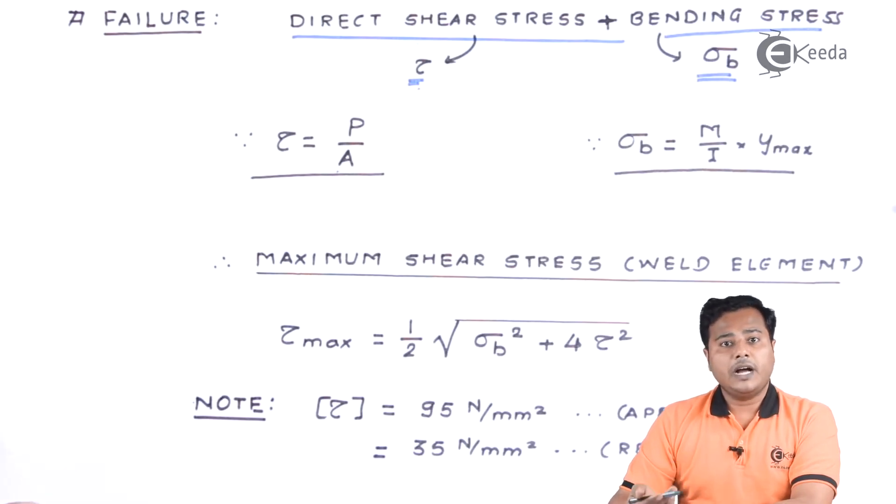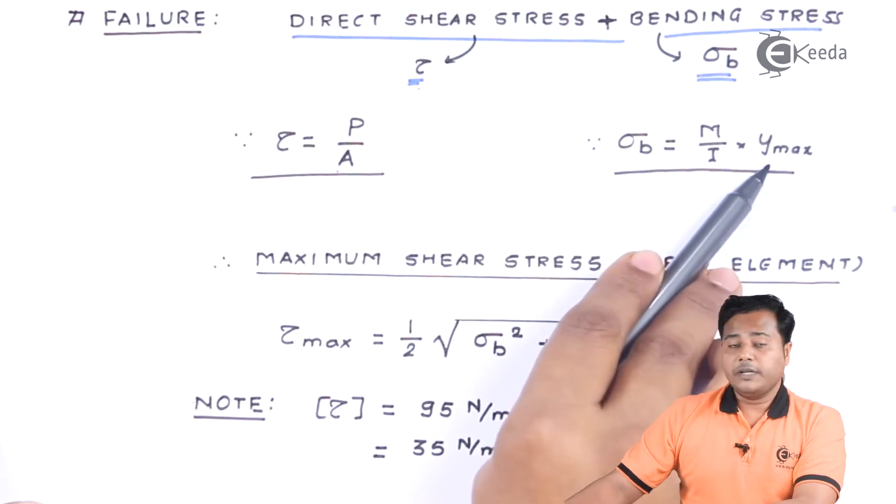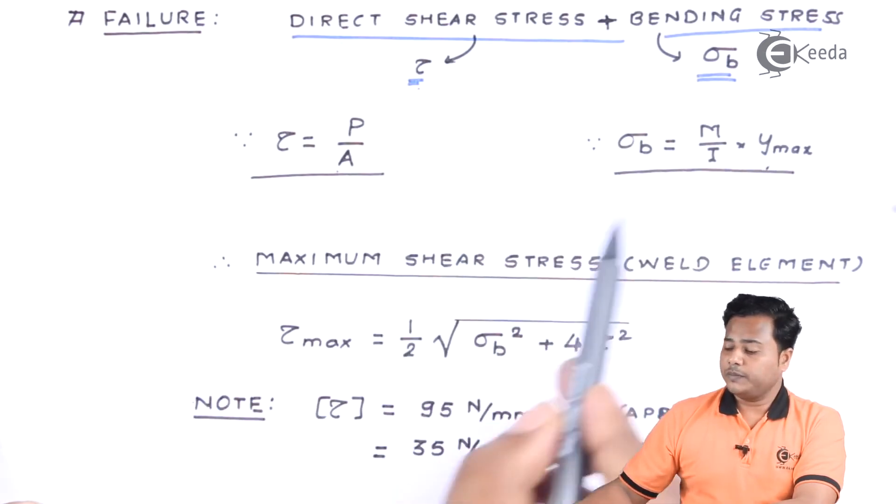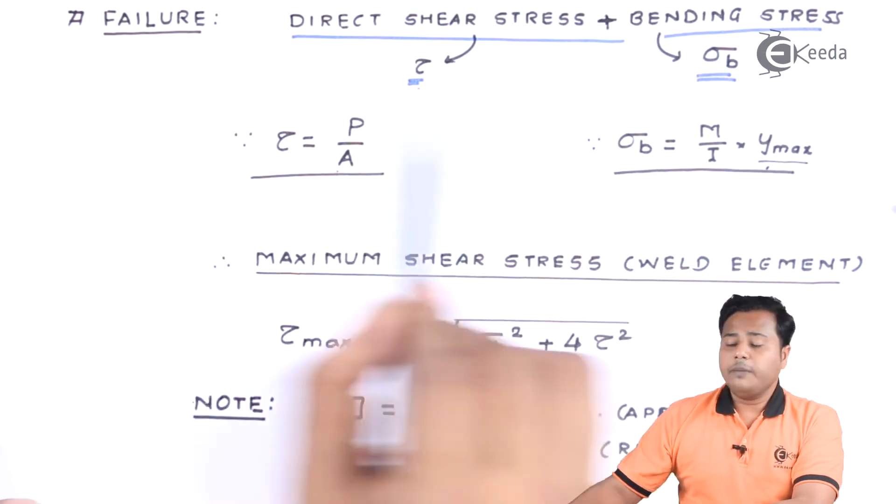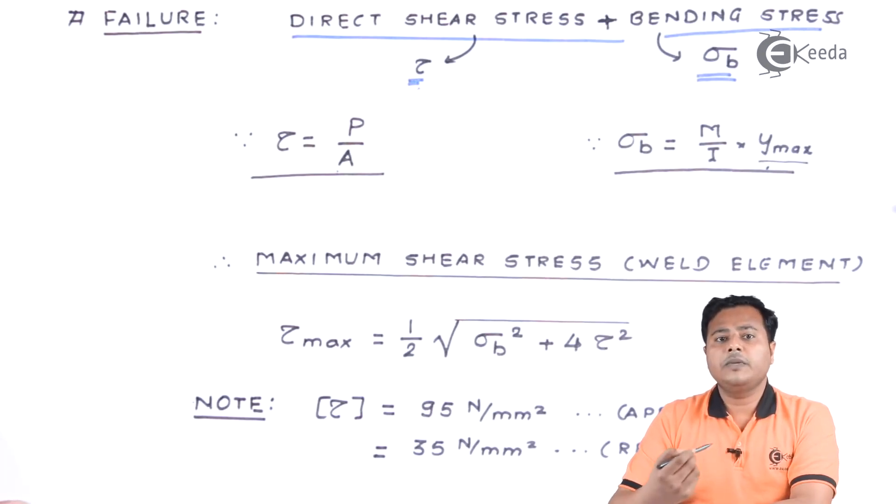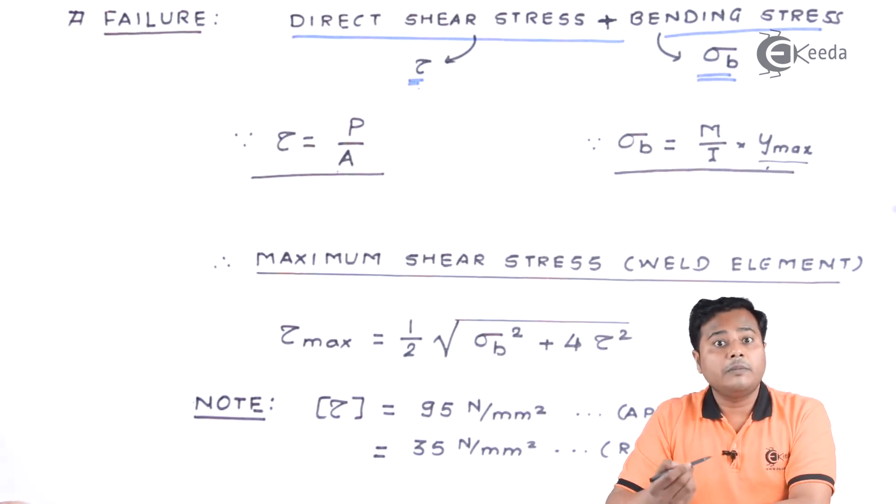Sometimes it may be the IXX. Sometimes it will be IYY. Sometimes it will be the combination of both of them. And this is the YMAX which is nothing but the distance of maximum distant fiber of the given cross section.